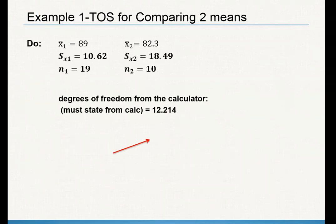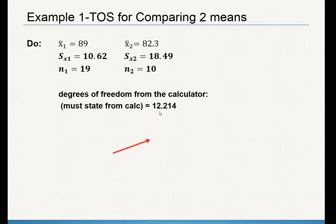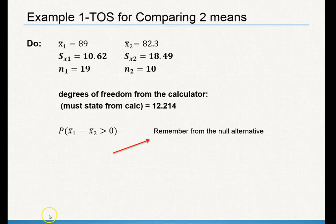The first part of your do portion is making sure that you state all of your statistics: the mean of sample one and sample two, standard deviation, and sample size. I would highly suggest doing this entire thing on your graphing calculator, showing your work for your formula, but getting the p-value, the test statistic t, and your degrees of freedom from your graphing calculator. Please make sure that you don't forget to write your probability statement — this is one of the easiest things to forget.